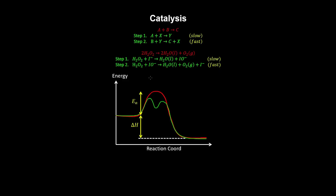A catalyst can increase the rate of a reaction by increasing the number of effective collisions and also providing a reaction path with a lower activation energy. For example in this reaction, the catalyst is consumed in a rate limiting step and regenerated in a subsequent step, whereas the intermediate Y is produced in the slow step.